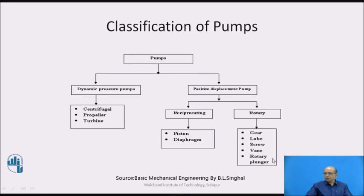Then we have the rotary plunger type of pumps. So these are the five pumps which come under the rotary type, whereas under the reciprocating type, we have the piston or the diaphragm type.